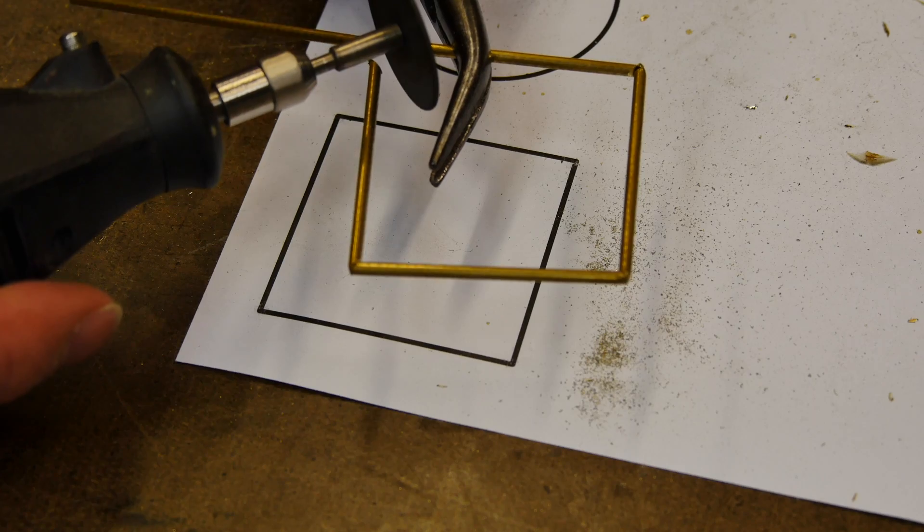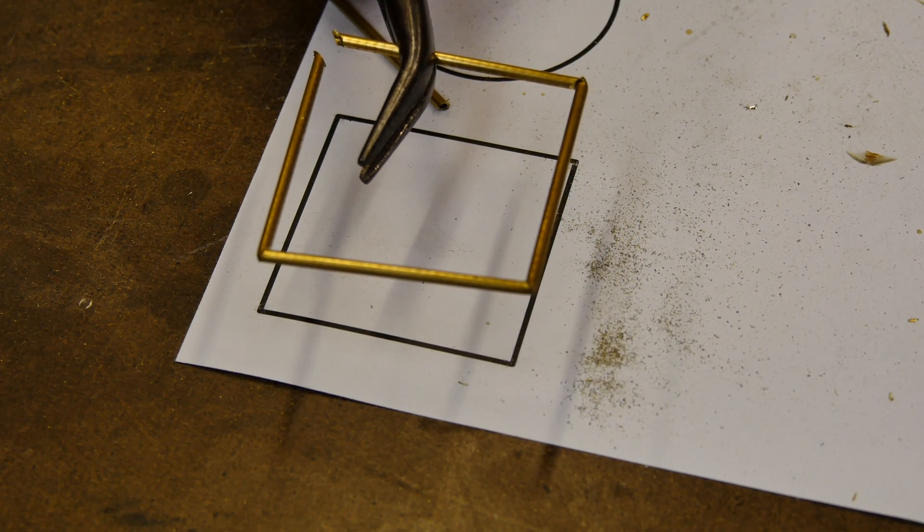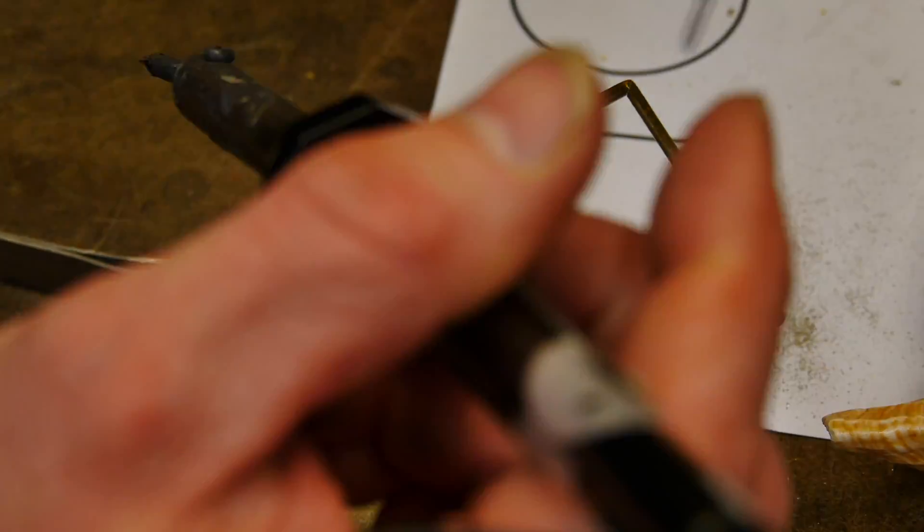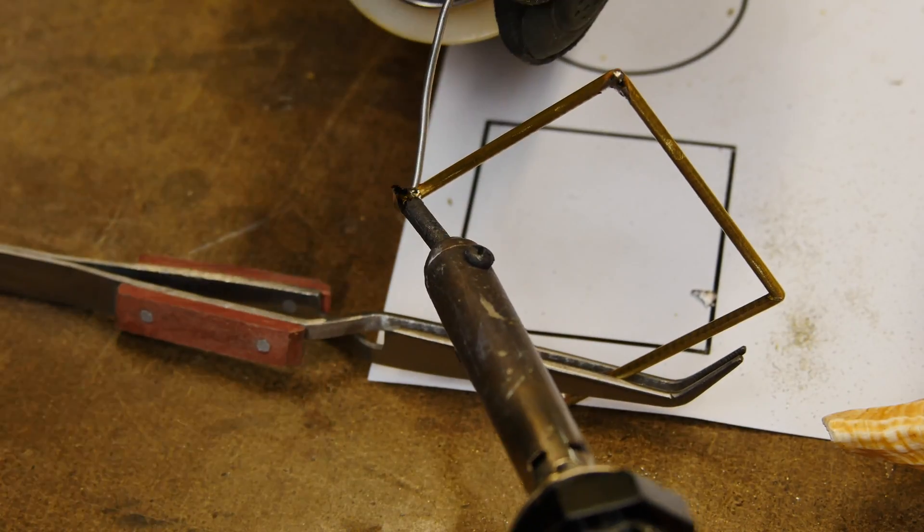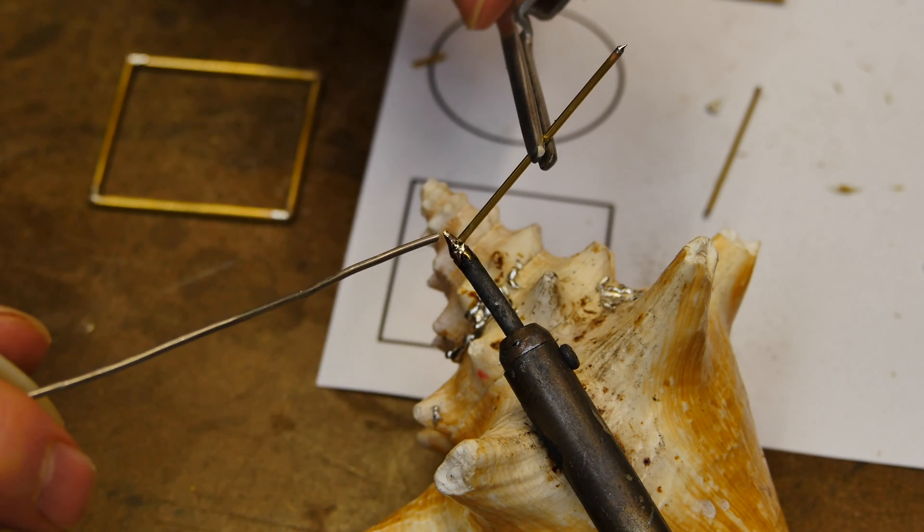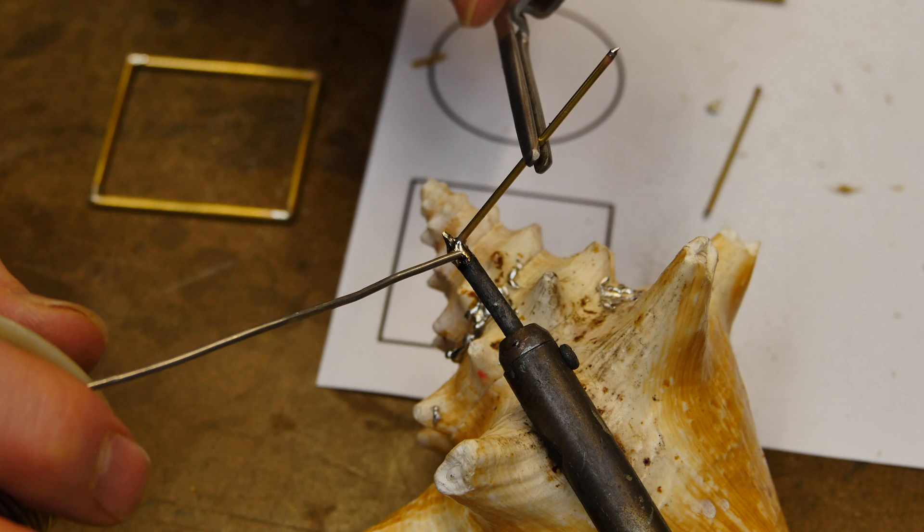And we're going to make another square for the top. In this case I think I'm using like a 16th inch tubing here.